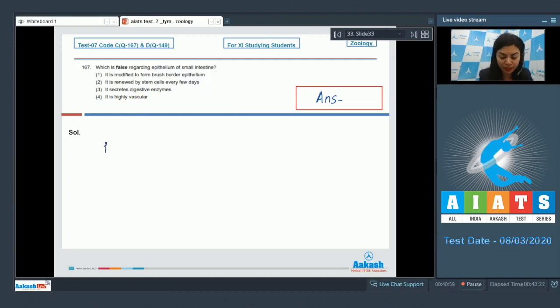Let's analyze the options one by one. One, it is modified to form brush border epithelium. This is true. The villi present in the small intestine increase the absorptive surface area multifold. And these epithelial cells bearing these villi give it a brush border appearance. So this is a true statement. We are looking for a false statement.